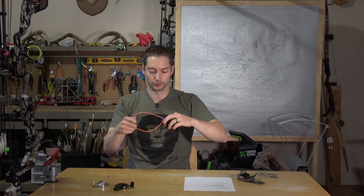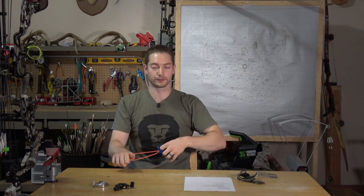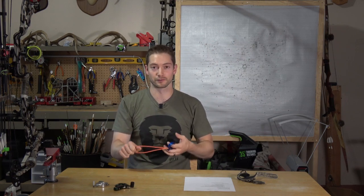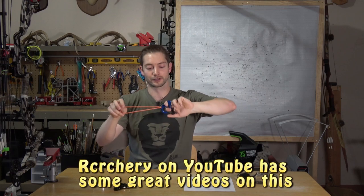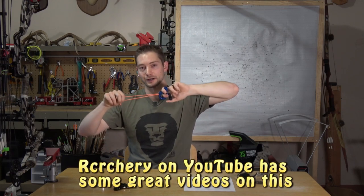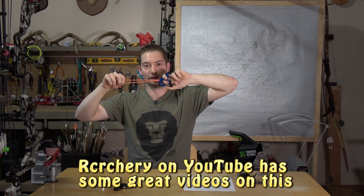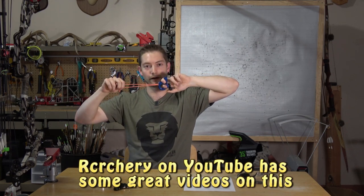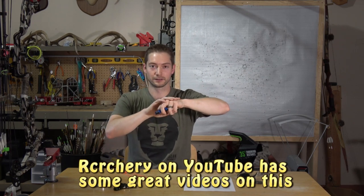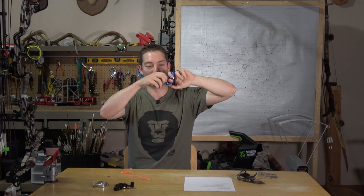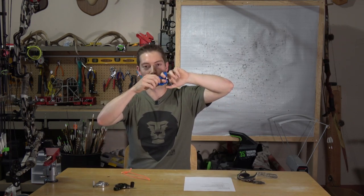Now the other school of thought, and there's a bunch of different minor variations on this, but the other school of thought is you basically get back to that anchor position. You kind of load your thumb on that trigger and then you relax your hand. And as you relax the muscles in your hand, it again allows that release to slip forward a little bit, which pulls the trigger into your thumb, causing the release to fire as a surprise release.